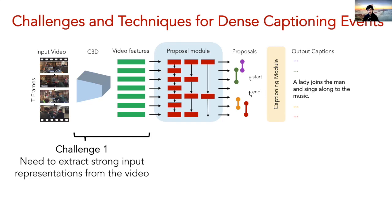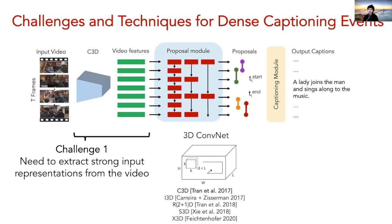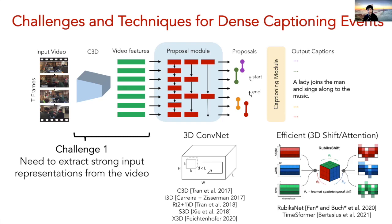Our first challenge is that we need to extract strong input representations from the video. Recent work has leveraged 3D convolutional neural networks such as C3D as the backbone for video feature extraction. More recent architectures have leveraged 3D CNNs such as I3D, R2+1D, S3D, and X3D among others. For designs focused on efficiency, we also see features using learnable 3D shift in the case of Rubik's Net, or 3D self-attention in the case of TimeSformer and similar architectures.